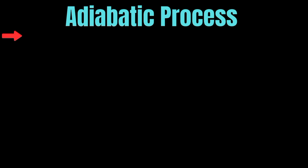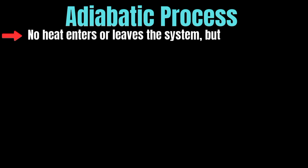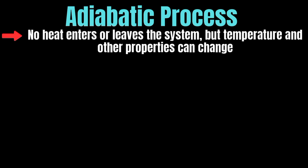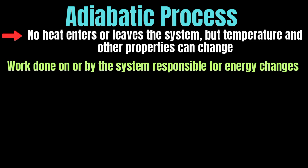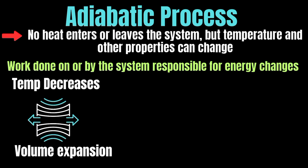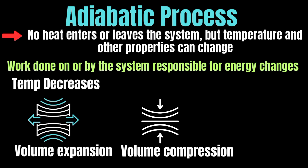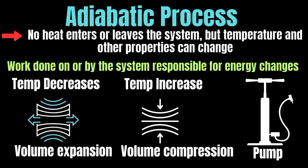An adiabatic process is one where no heat enters or leaves the system, but temperature and other properties can change. All energy changes occur due to work done on or by the system. If a system expands, its temperature decreases because it uses internal energy to do work. If a system is compressed, its temperature increases because work is being done on it. For example, when you quickly compress air inside a bicycle pump, it heats up because no heat has time to escape.